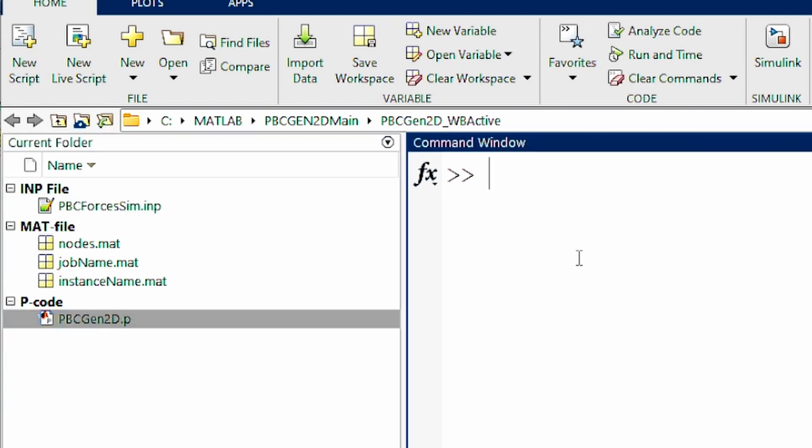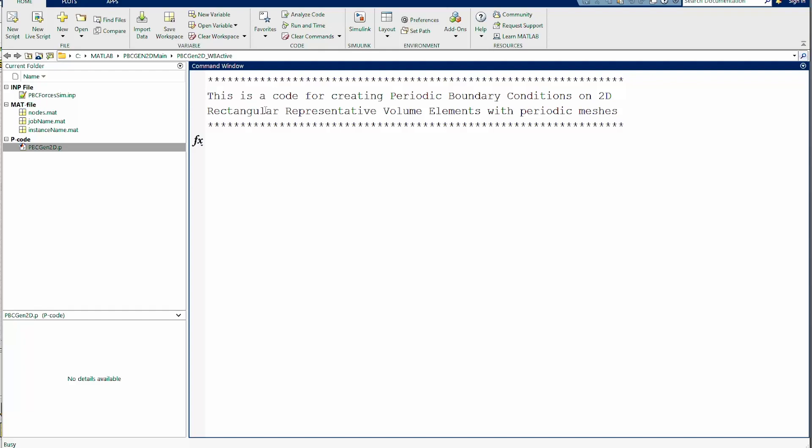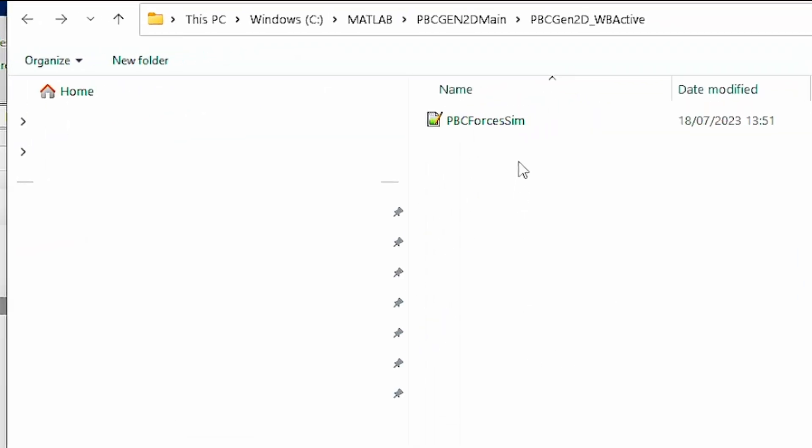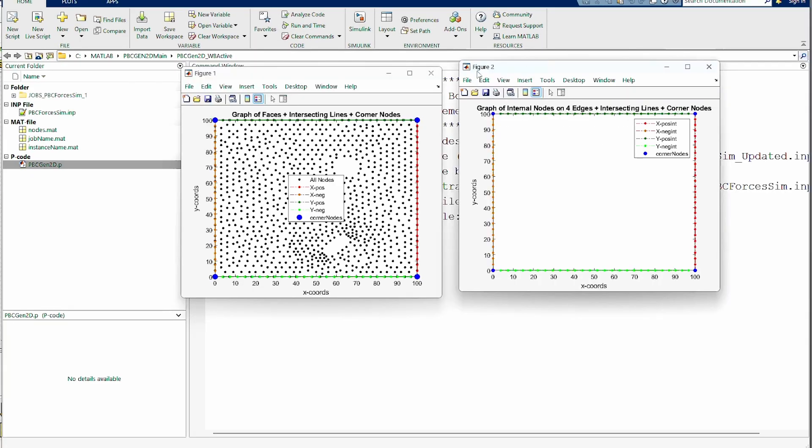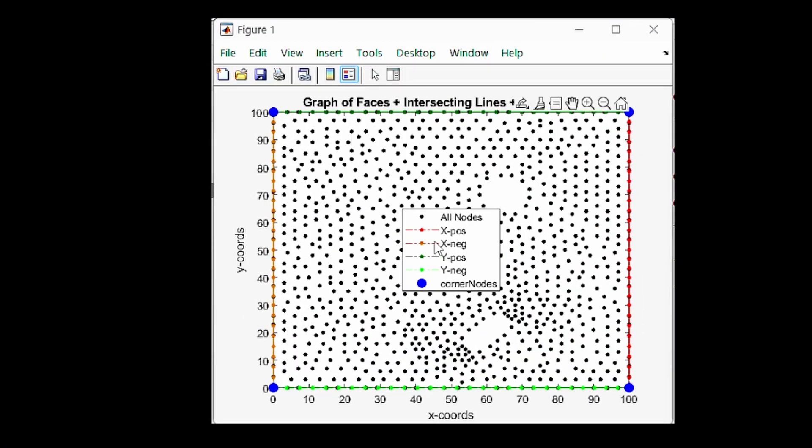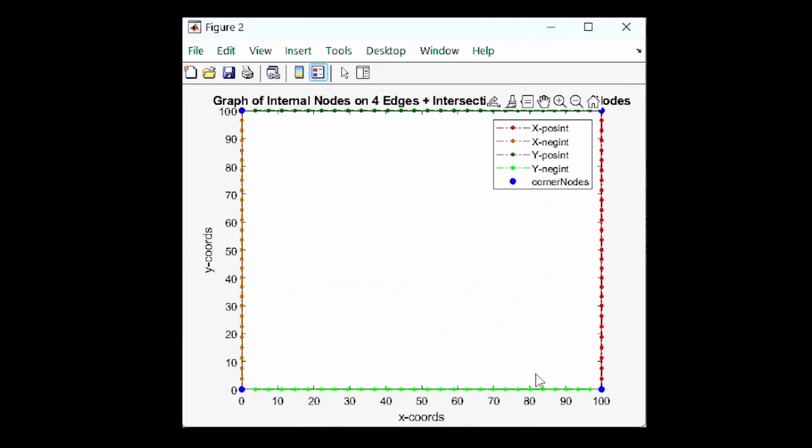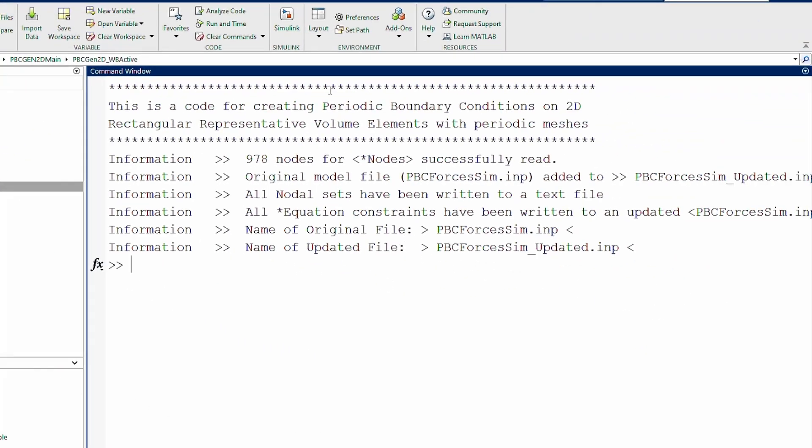I'll paste that so ABAQUS will now run in that environment. Then I can create a job - I'll call it PBC forces. Once we have that, we can write input file. This takes this particular model that doesn't have a periodic boundary condition and makes it available for MATLAB to work on it. I now go back to MATLAB. You can see that particular input file has appeared here and we've got our executable there.